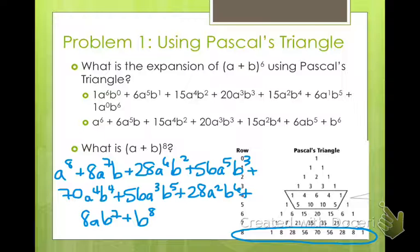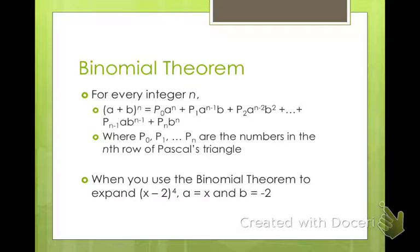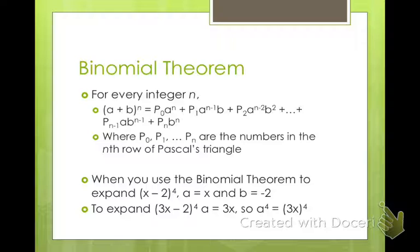Pascal's triangle is pretty easy to create and pretty easy to use. Now, the binomial theorem is basically a more formal way to say that you use Pascal's triangle with your powers — you start with a to the power and end with b to the power. When you use the binomial theorem to expand x minus 2 to the 4th power, a is your x value and b is your negative 2. Also remember, if you have a value in front of your x — like a becomes 3x — when you raise that to a power, you're raising the whole quantity 3x to that power, meaning you multiply the 3 to that power as well, not just the x.